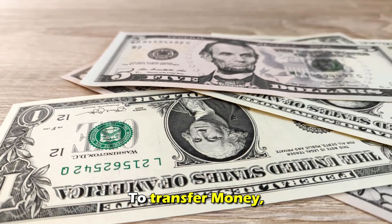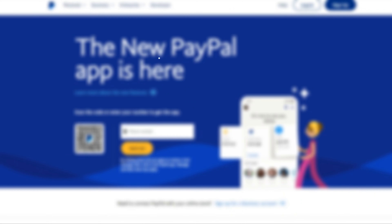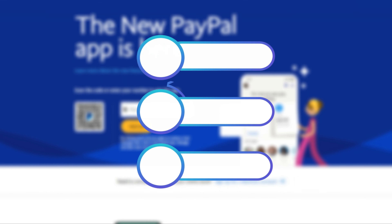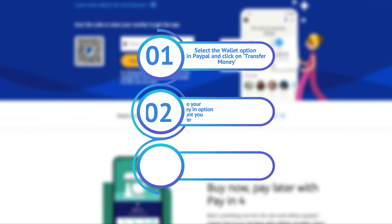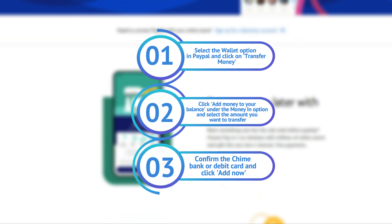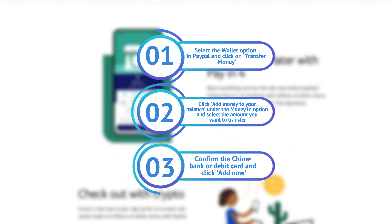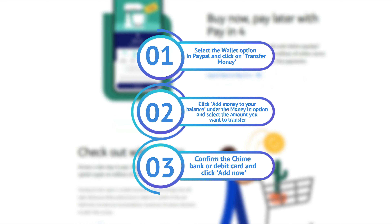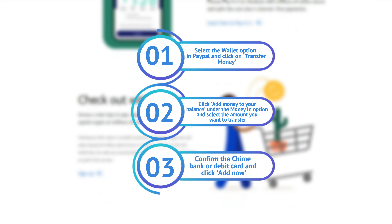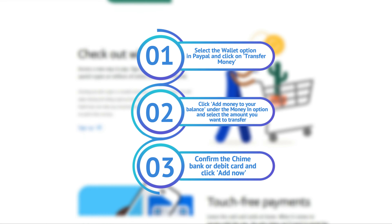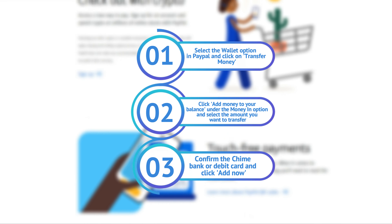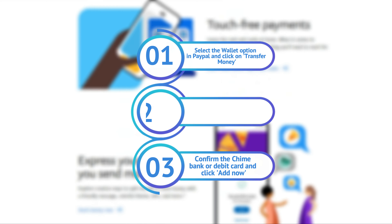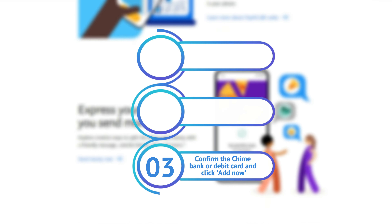To transfer money, select the wallet option in PayPal and click on transfer money. Click add money to your balance under the money in option and select the account you want to transfer. Confirm the QIIME bank or debit card and click add now.